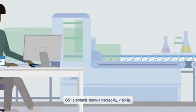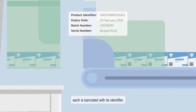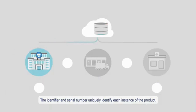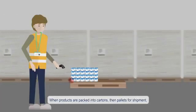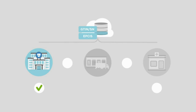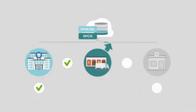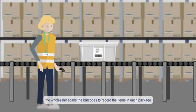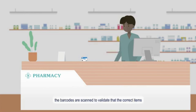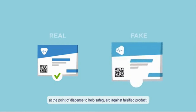GS1 standards improve traceability, visibility, and help prevent falsified and substandard medicines reaching patients. As medicines are manufactured, each is barcoded with its identifier, batch number, expiry date, and serial number. The identifier and serial number uniquely identify each instance of the product. When products are packed into cartons, then pallets for shipment, the barcode information is recorded, capturing the contents for each packing level. At delivery, the wholesaler scans the barcodes to validate the correct items have been received and updates their systems. When preparing a shipment for a pharmacy, the wholesaler scans the barcodes to record the items in each package to ensure there are no gaps in the product's lifecycle. During receipt at the pharmacy, the barcodes are scanned to validate that the correct items are delivered and to retrieve product history. The unique identifiers encoded in these barcodes allow for verification at the point of dispense to help safeguard against falsified product.